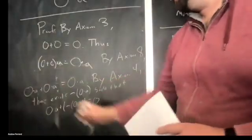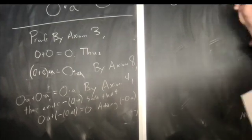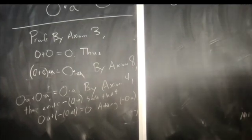So now we add that to both sides. So what we're going to get here is 0 times A plus 0 times A plus the opposite of 0 times A is equal to 0 times A plus the opposite of 0 times A, right? So I can add the same thing to both sides.